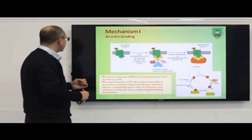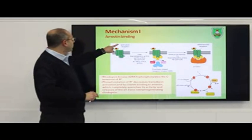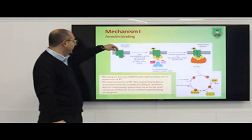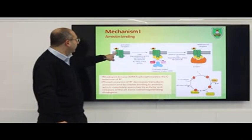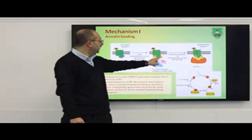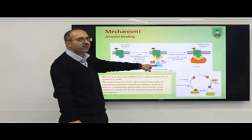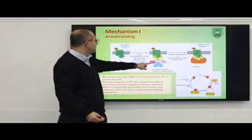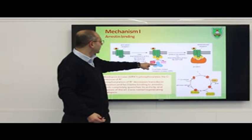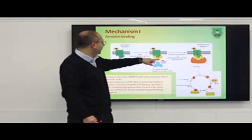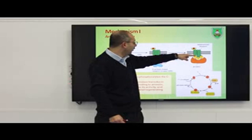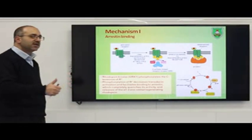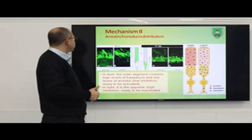Mechanism number one is the protein arrestin. When the rhodopsin molecule is activated by light, it gets phosphorylated by a kinase. This phosphorylation allows the protein arrestin — whose name indicates what it does — to bind to the phosphorylated molecule, inactivating rhodopsin and arresting the signal.